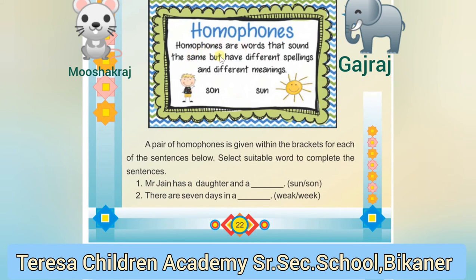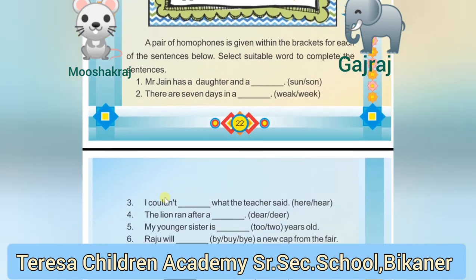Homophones — what are homophones? Homophones are words that sound the same but have different spellings and different meanings. For example, 'son' and 'sun' are pronounced exactly the same, but when we look at spelling and meaning, both are different. S-O-N means 'beta' and S-U-N means 'suraj'. These are all homophones. You have to fill in all these.